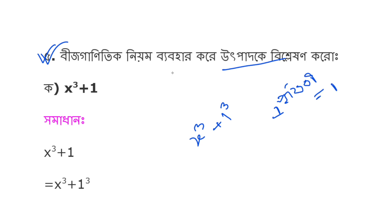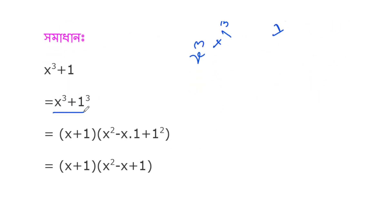For x³+1, I can write this as x³+1³. Using the formula a³+b³ = (a+b)(a²-ab+b²), where a³+b³ then equals (a+b) times (a²+ab+b²).